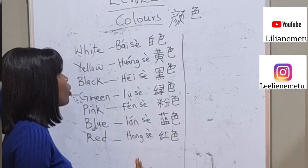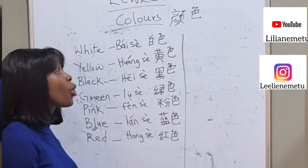You could have red, black, blue, yellow. So today I will be teaching you how to say these colors in the Chinese language.